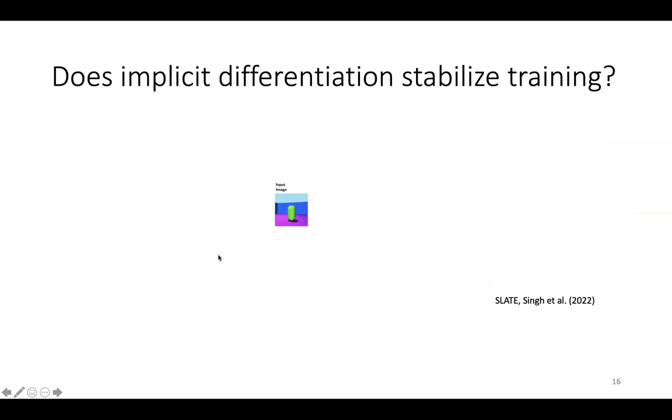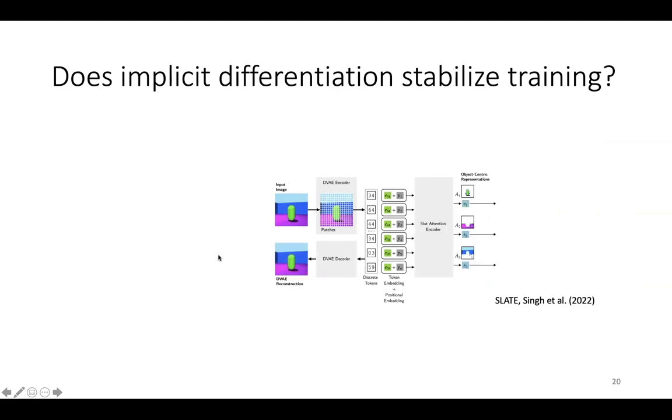To test our method, we use the latest method that builds upon slot attention, the slate architecture by Sing et al. The slate architecture uses a discrete VAE to tokenize the image. It then uses slot attention to cluster the tokens and a transformer decoder to reconstruct the tokens.